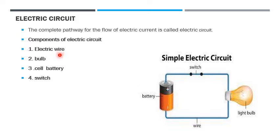Electric wire, bulb, cell battery, and switches. So, what is the function of the switch? Switch controls the flow of electricity in the circuit. This is the switch, this is the bulb, this is the wire, and this is the battery.